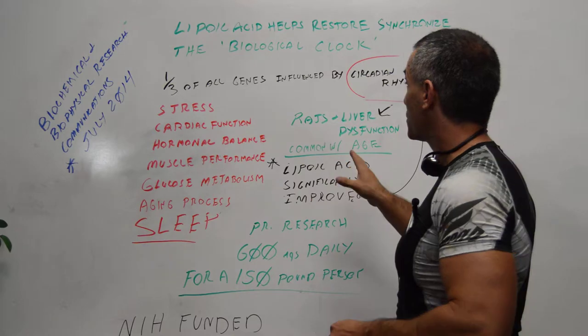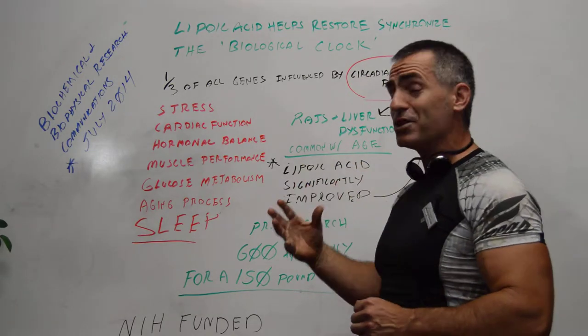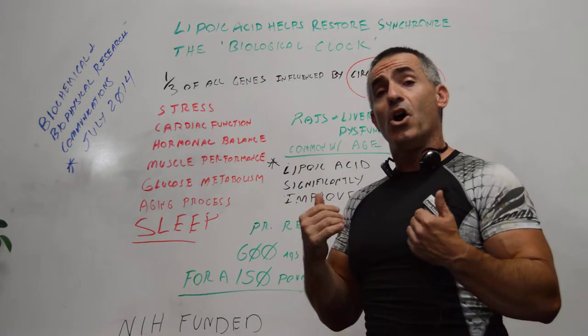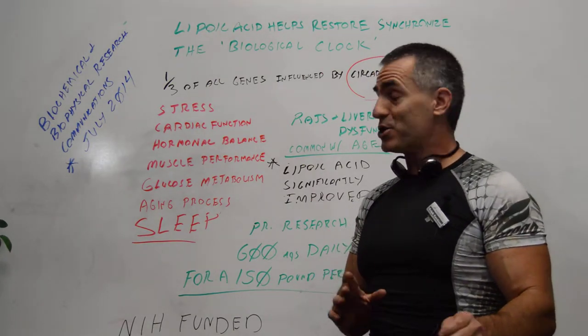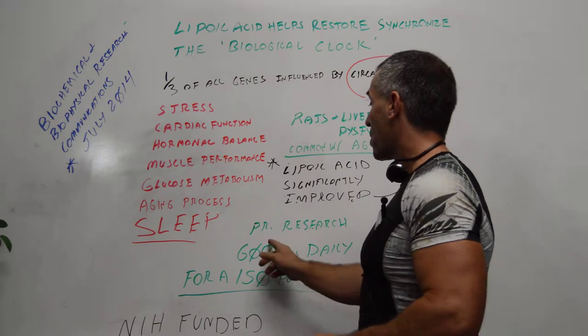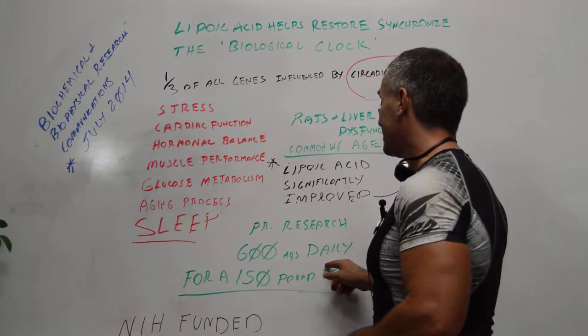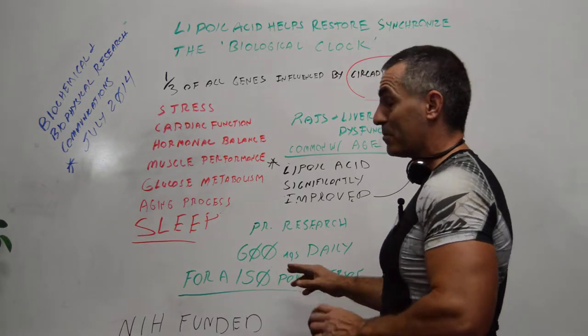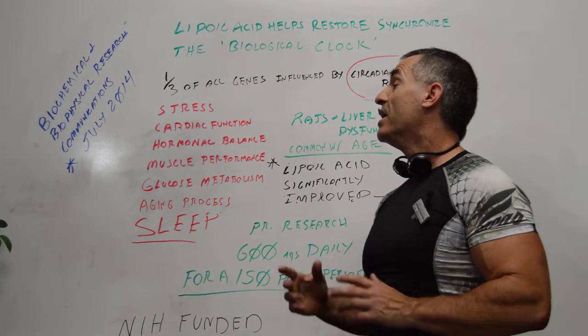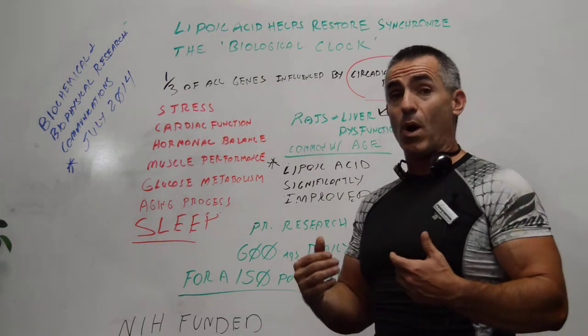The Linus Pauling researcher said in prior studies to get that exact same effect on the human liver, the dosages, always talk to your medical practitioner first, were around 600 milligrams daily for the average 150-pound person. You gauge it out when you talk to your medical practitioner in regards to what works best for you if you decide to explore this.